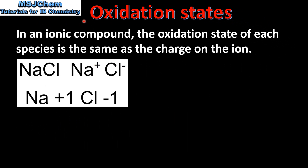Next we'll have a look at the rules for assigning oxidation states. Our first rule: in an ionic compound, the oxidation state of each species is the same as the charge on the ion. For example, the ionic compound sodium chloride is composed of sodium ions and chloride ions. The charge on the sodium ion is 1+, the charge on the chloride ion is 1−, so the oxidation states are plus 1 and negative 1 respectively.